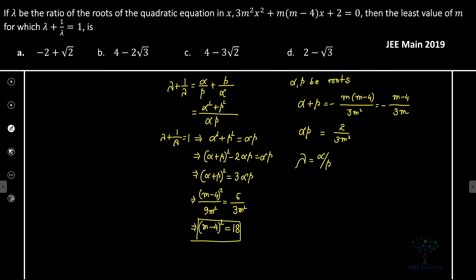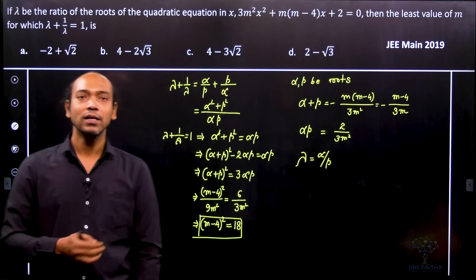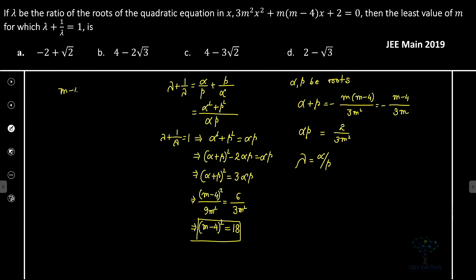So we're able to calculate the relation. Now we have to find the value of M. So (M minus 4)² equals 18. Since 18 can be written as 9 times 2, that is (3√2)². Therefore M minus 4 is equal to plus or minus 3√2, and so M is equal to 4 plus or minus 3√2.